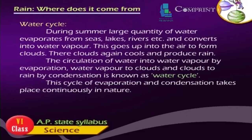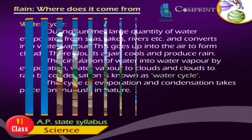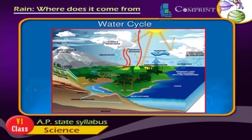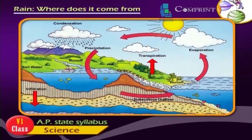Water cycle: During summer, large quantities of water evaporate from seas, lakes, rivers, etc., and convert into water vapour, which goes up into the air to form clouds. The clouds cool again and produce rain. The circulation of water — from water vapour by evaporation, to clouds, and then to rain by condensation — is known as the water cycle. This cycle of evaporation and condensation takes place continuously in nature.